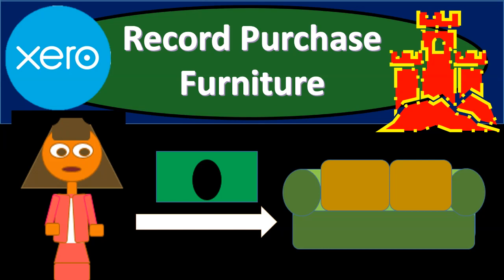In this presentation, we're going to record the purchase of furniture for cash — furniture being a depreciable item, a property, plant, and equipment type of item.